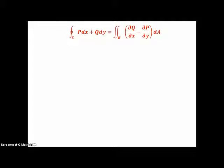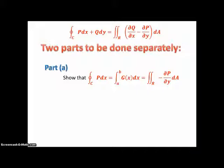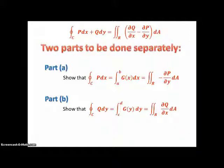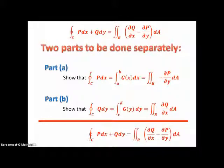Here's the part of Green's theorem we're going to prove, in two parts separately. Part A: we'll show that the line integral P dx is equivalent to a single variable integral from A to B of G(x) dx, and that this also equals the double integral over the region of the negative partial derivative of P with respect to Y over the area. Part B: we'll show that the line integral Q dy equals a single variable integral from C to D of G(y) dy, and that this equals the double integral over the region of the partial derivative of Q with respect to X. Adding both sides then immediately proves Green's theorem.